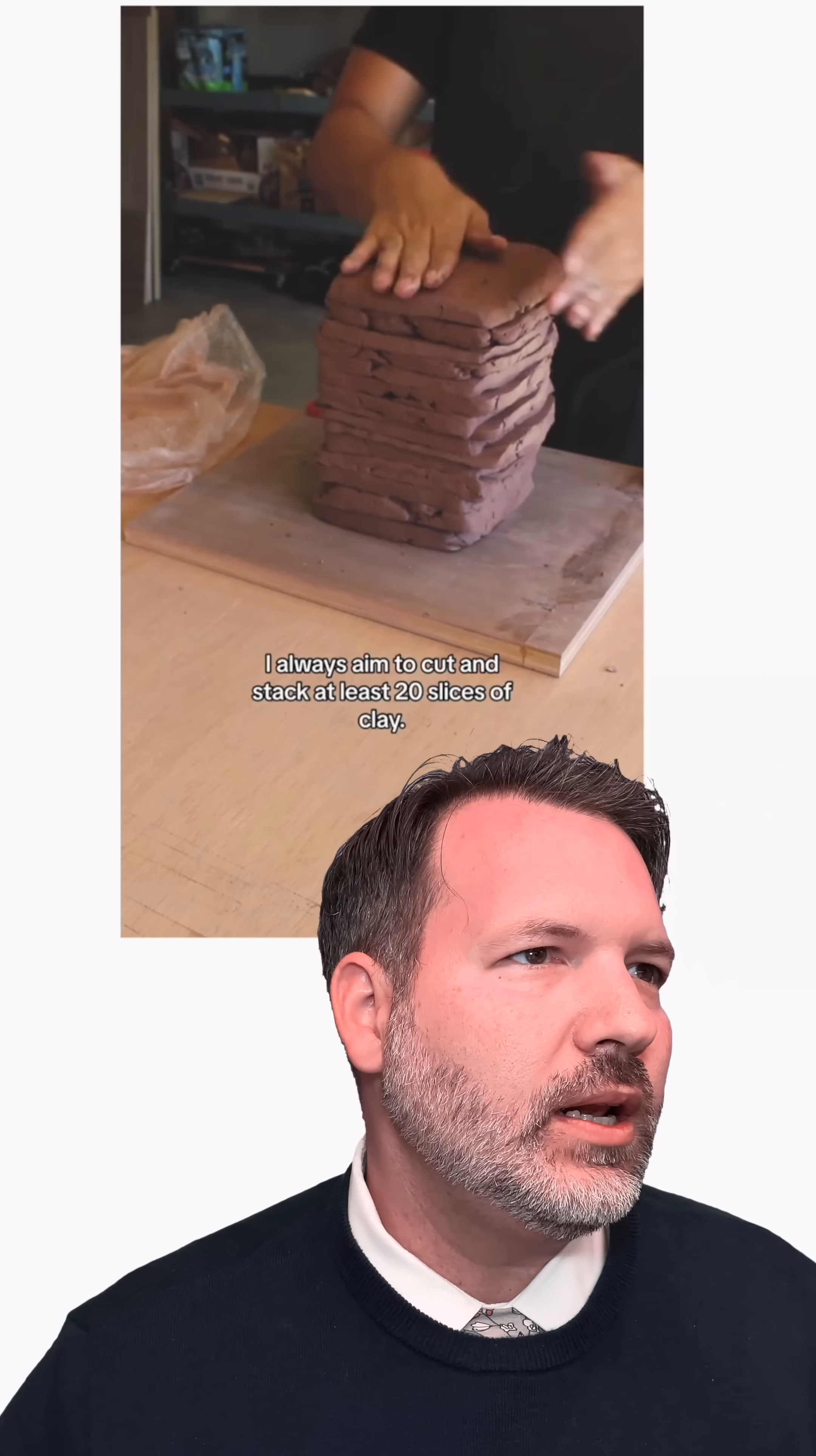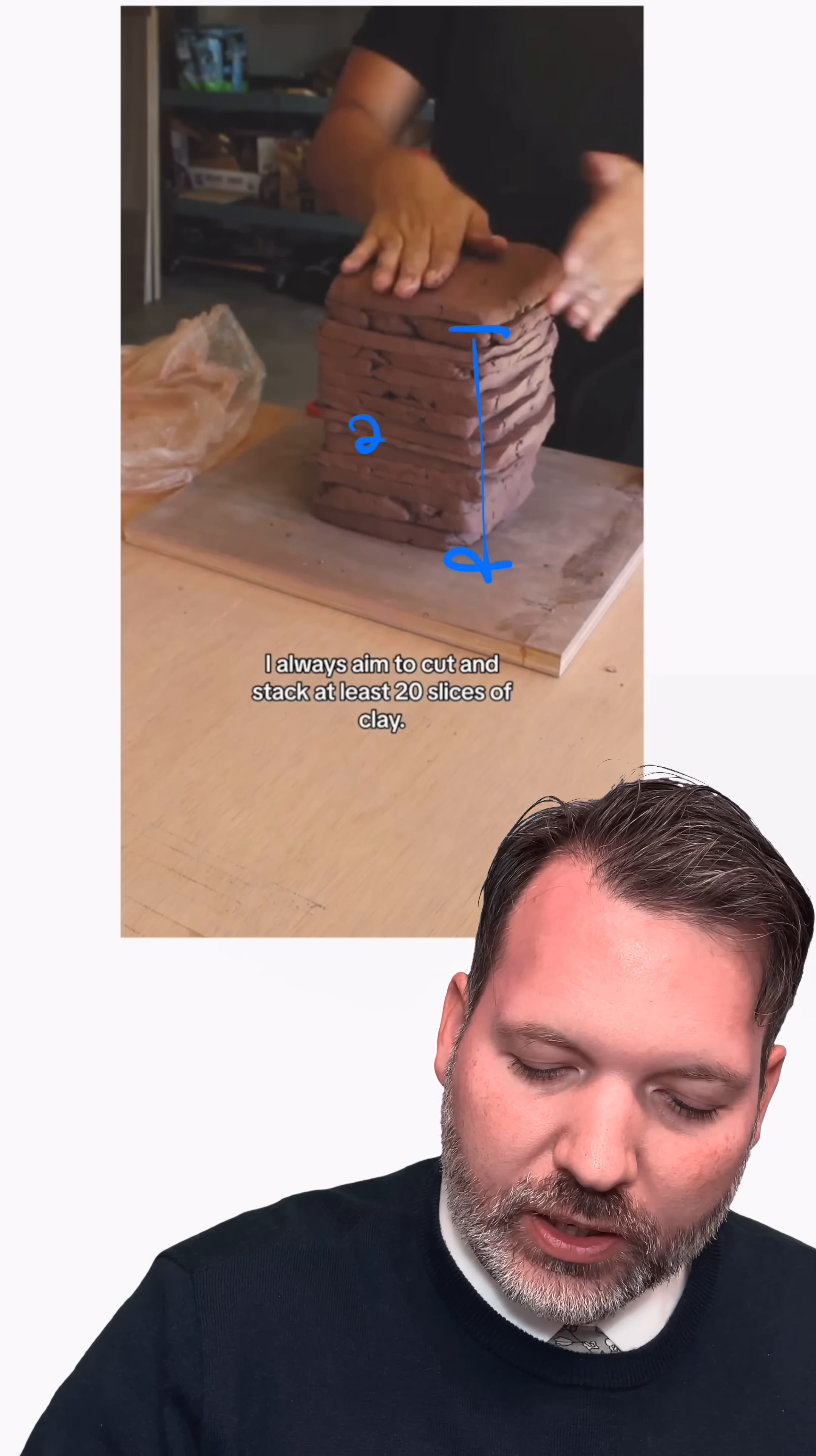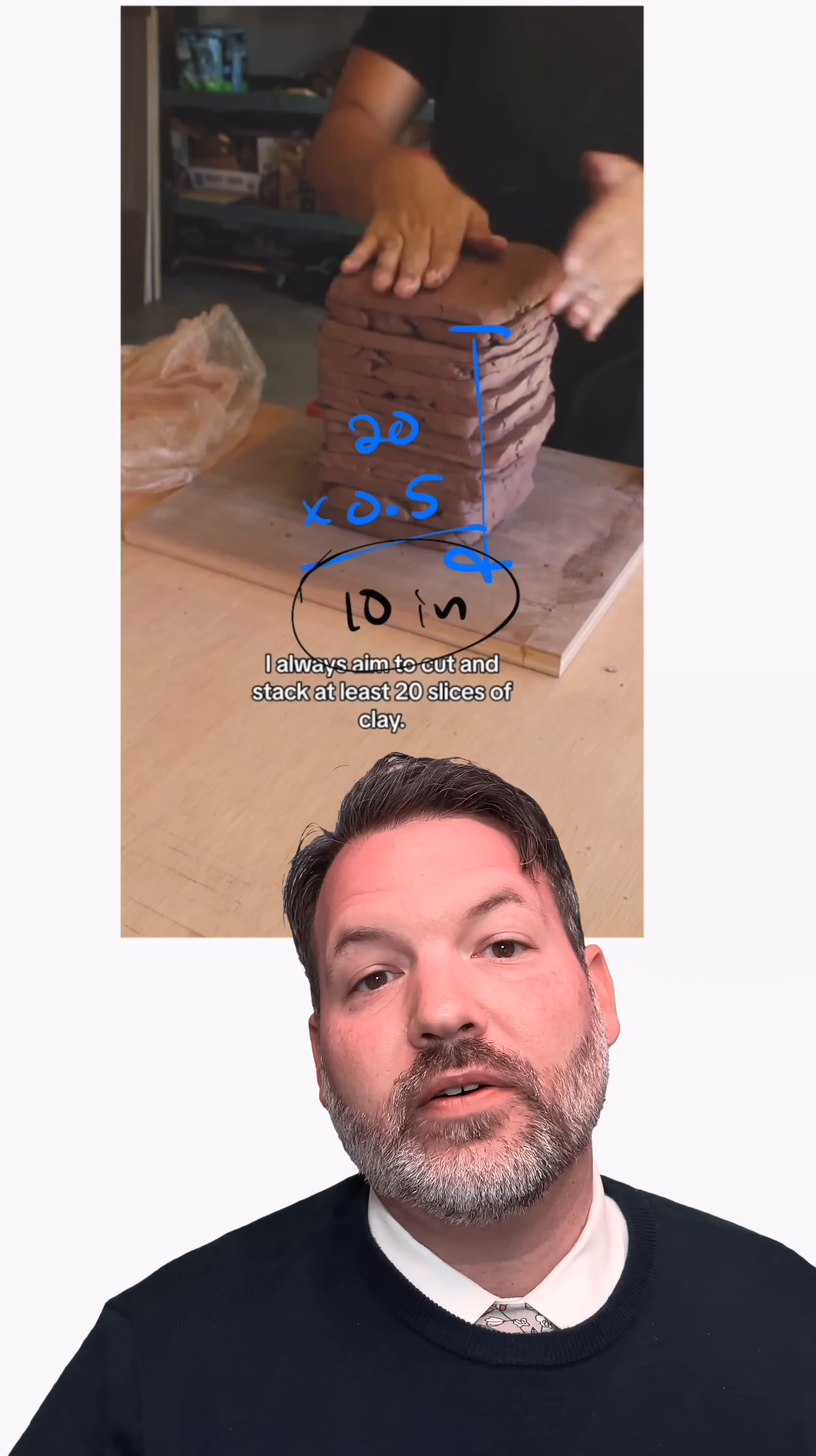I have got to know how thin those slices are. First of all, we need to know the total thickness that we're talking about. He said that he liked to start with 20 layers of about a half inch each. So if we work that out, we've got 20 layers times 0.5 inches each gives us 10 total inches of thickness that we're working with. Now to figure out the thickness of each one of those layers, we just have to take that 10 total inches and divide by the total number of layers.